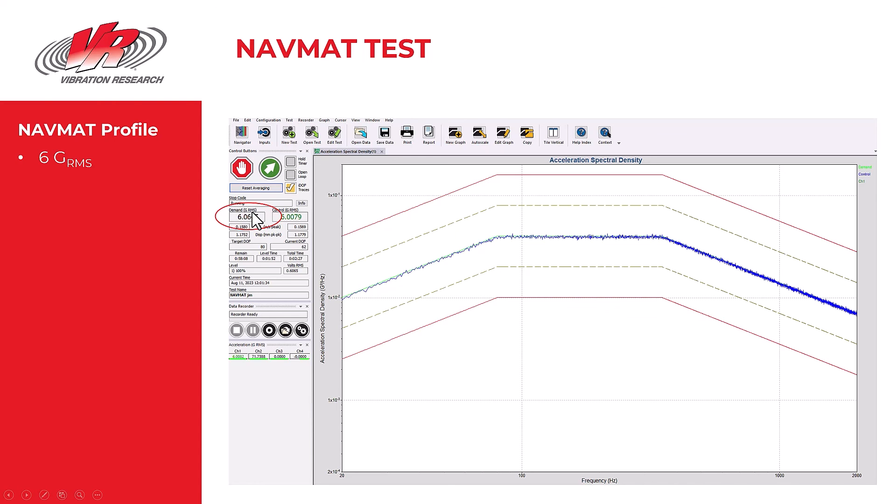Another metric that engineers want to know is the GRMS. And a NAVMAT test has a GRMS value of about 6 GRMS. That would be the total area under this particular curve.